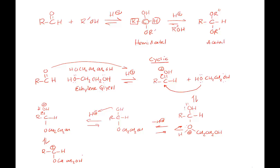Now what's going to happen is the other OH is going to wrap around the molecule and add to the carbocation. What I'm going to make is a 5-membered ring. So I'll have a 1, 2, 3, 4, 5-membered ring with the oxygens attached to the carbon, and the oxygen that just added is going to have a positive charge on it.